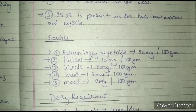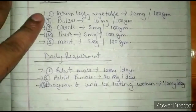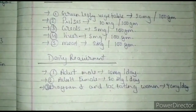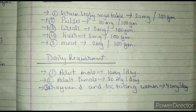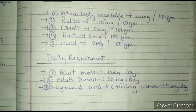Meat contains 2 milligrams of iron per 100 grams of meat. Moving to the next point — daily requirement of iron: an adult male needs 10 milligrams of iron per day, and an adult female needs 20 milligrams of iron per day.